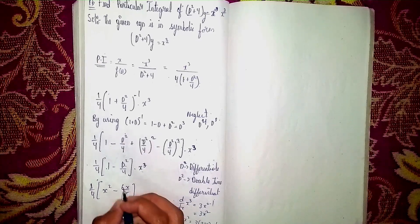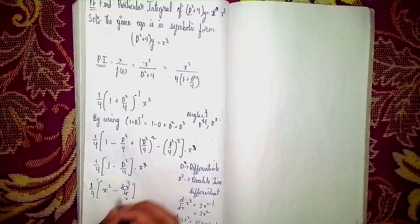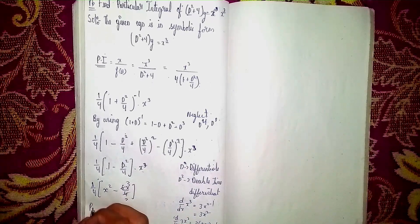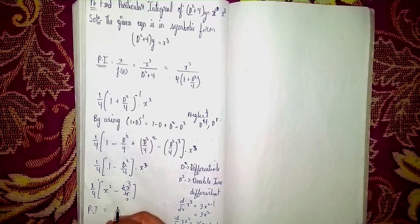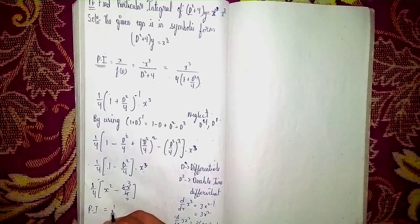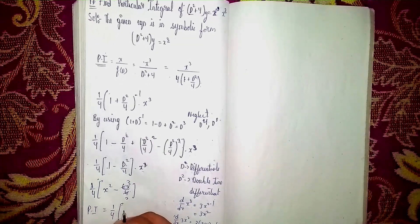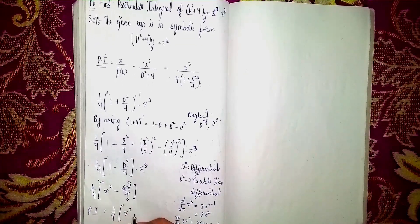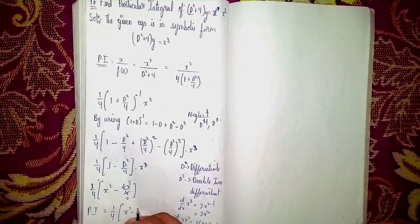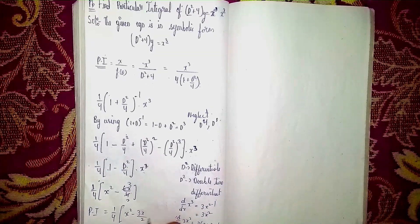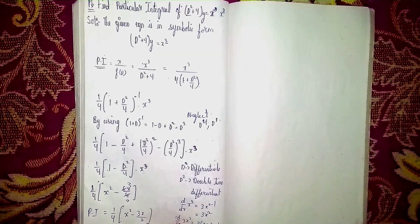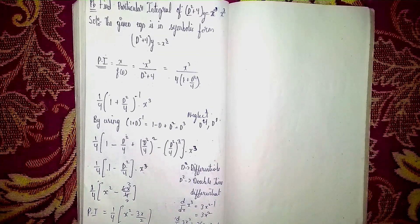So our particular integral PI = (1/4)[x³ − 3x/2]. This is our particular integral. Thanks for watching!